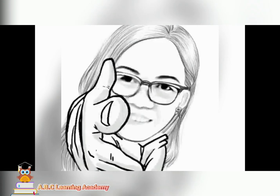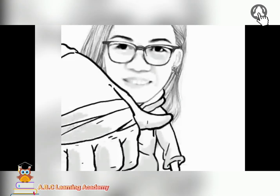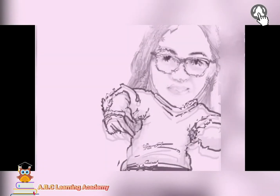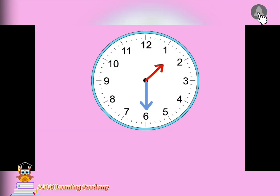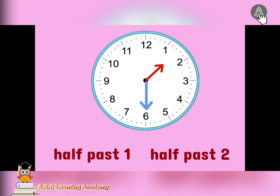Now it's your turn. Tell me what is the correct time. Are you ready? Here is the first clock. What is the time? Is it half past 1, or half past 2? You're right. The answer is half past 1. Why? Because the hour hand didn't yet reach number 2.